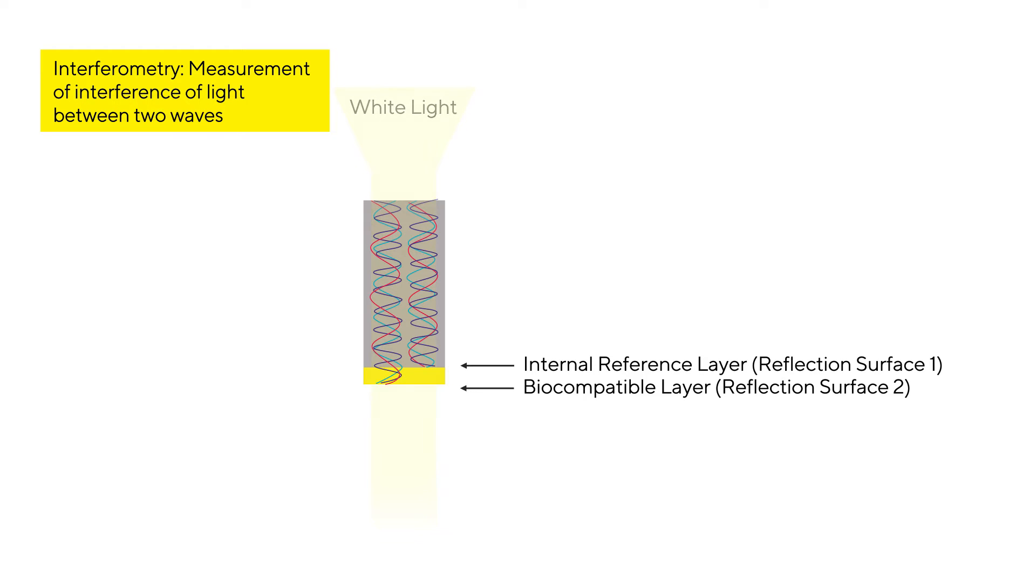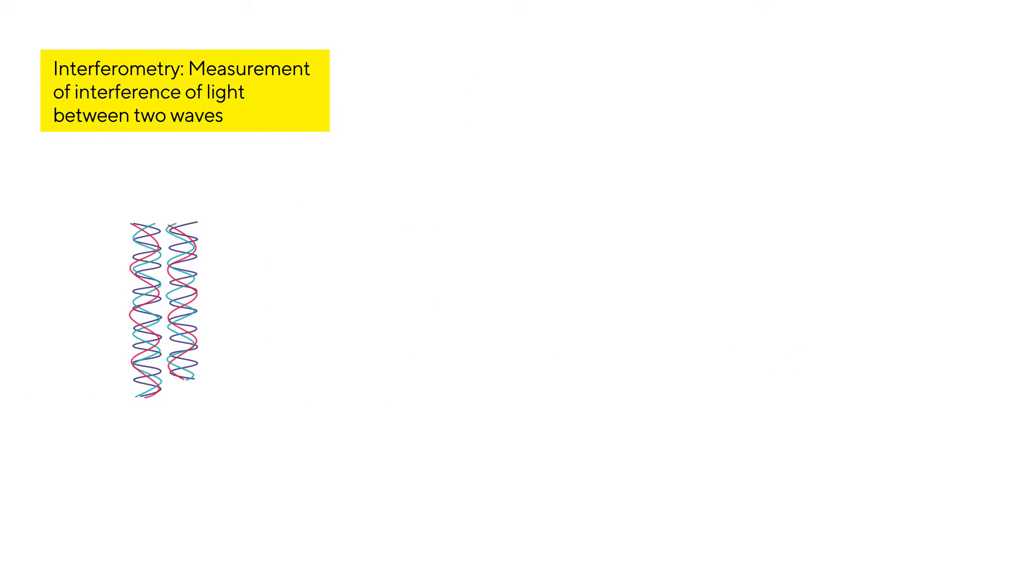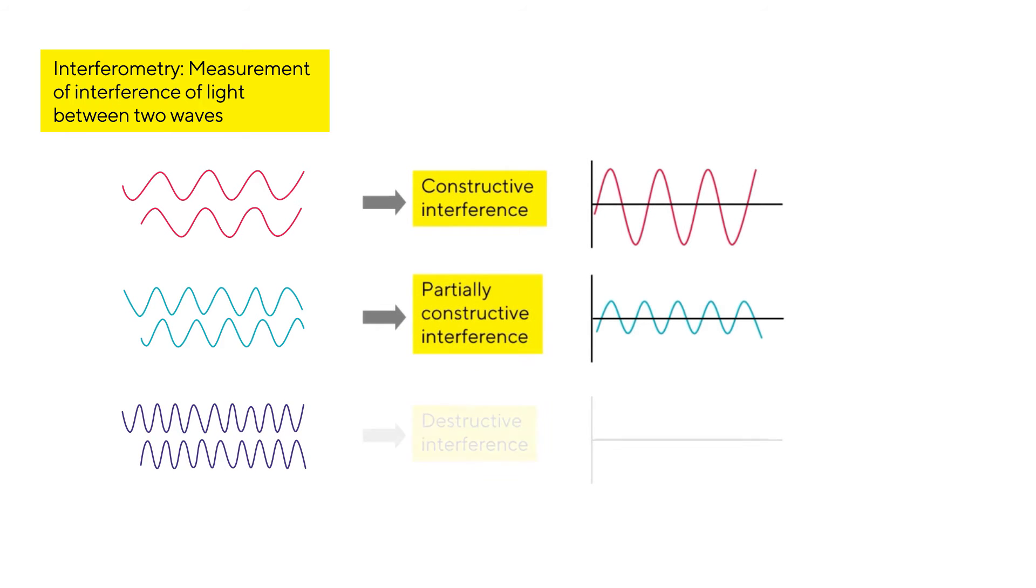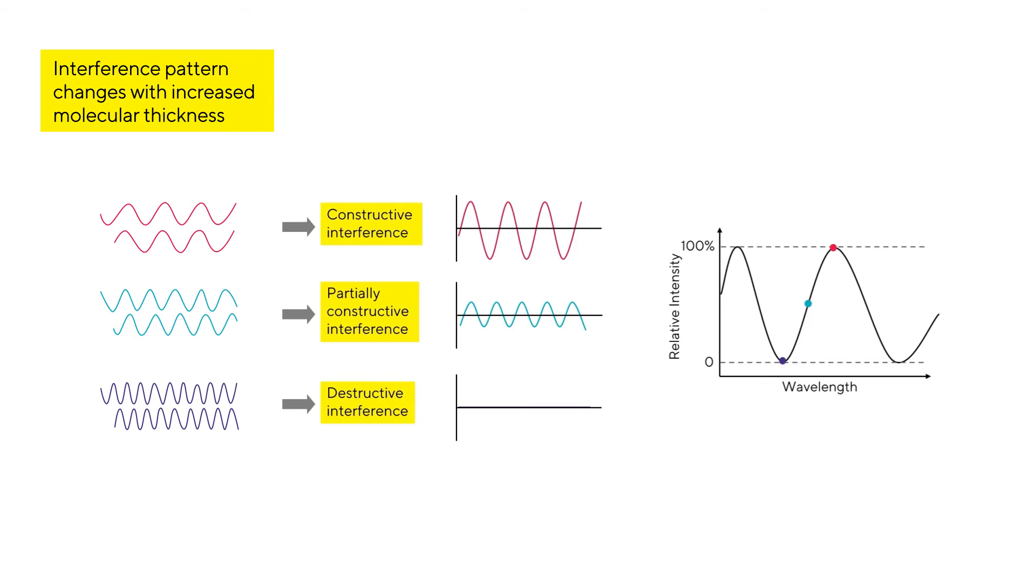White light that reflects from the two layers contains a mixture of wavelengths that show either constructive, partially constructive, or destructive interference. The spectral pattern of the reflected light changes as a function of the optical thickness of the molecular layer and results in a spectral shift.